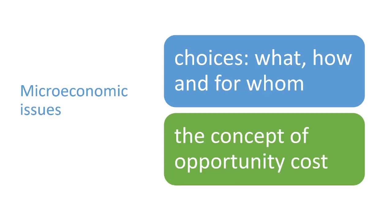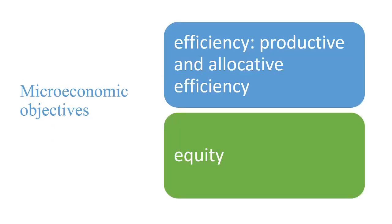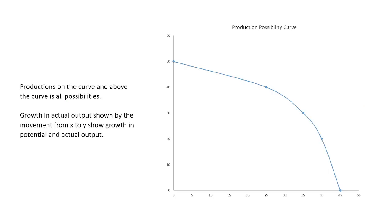Let's look at the microeconomic issues. The issues we will look at are what, how, and for whom, and the concept of opportunity cost of course. We also look at rational economic decision making, which is the marginal cost and the marginal benefits. The microeconomic objectives are efficiency - productive and allocative efficiency - and equity.